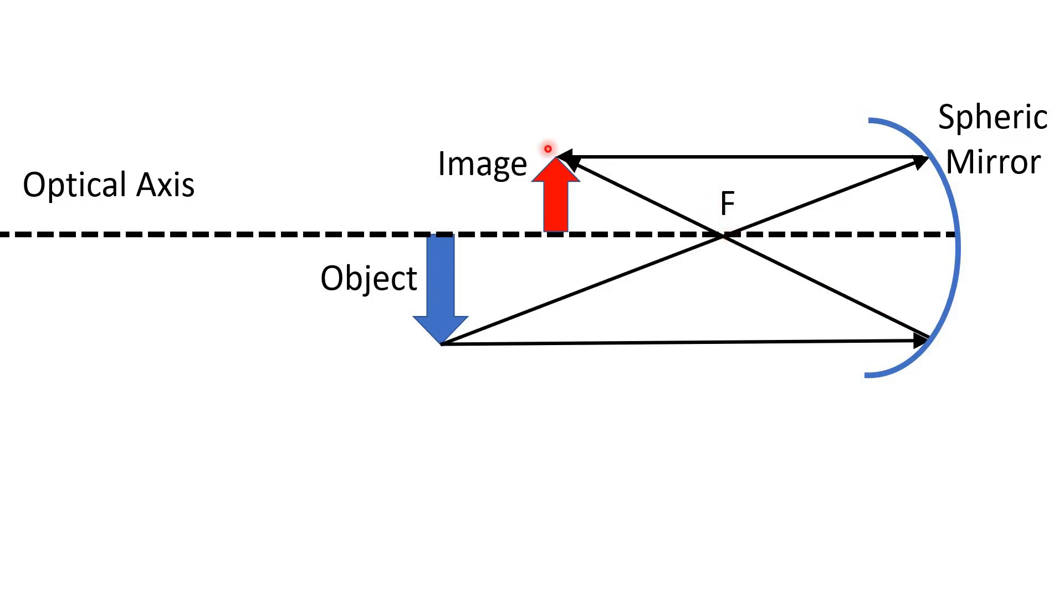And these two rays intersect, and the point that they intersect will be the top of the area. So this is the image, which is real and inverted.